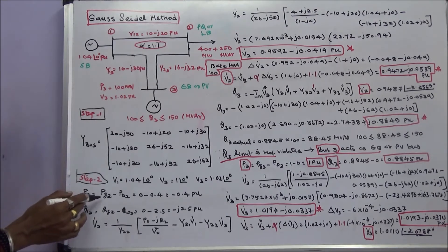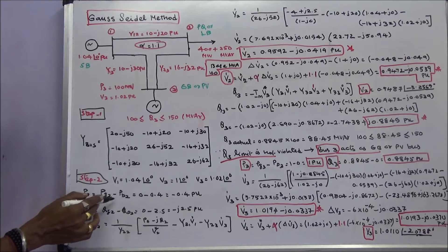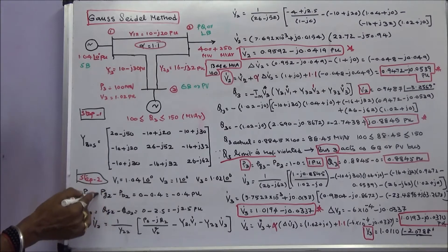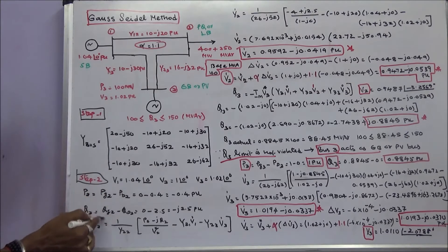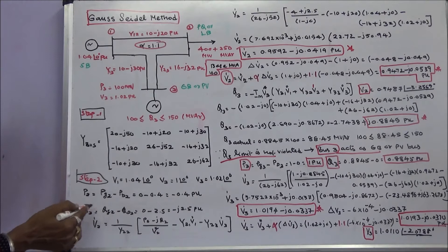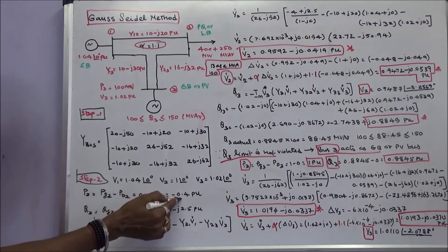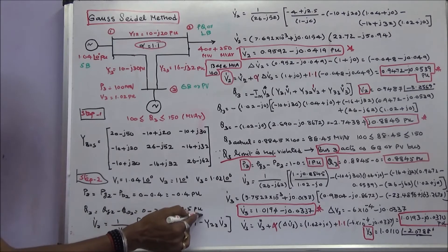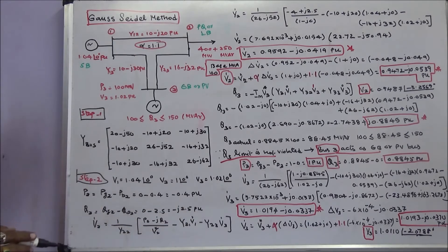Next we calculate P2 and Q2. P2 = PG2 − PD2 and Q2 = QG2 − QD2. Here real power generation is 0 and reactive power generation is 0. Therefore P2 = −0.4 per unit and Q2 = −j0.25 per unit.